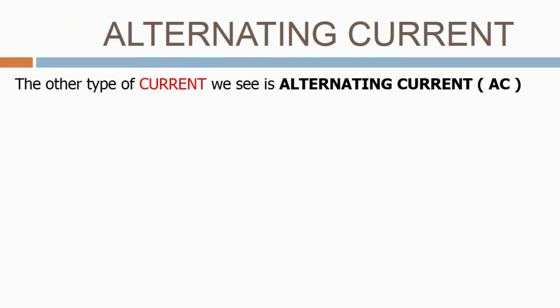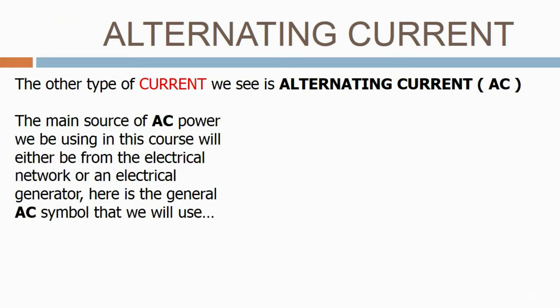The other type of current we see is alternating current or AC. The main source of AC power we will be using in this course will be from the electrical network or an electrical generator. Here is the general AC symbol that we will use. Basically a circle with a sine wave inside and a live and neutral terminal.